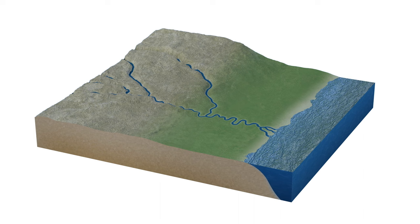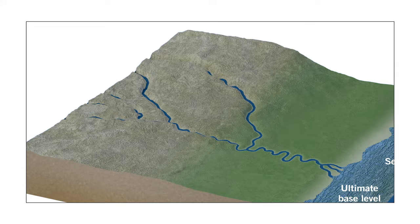You may have heard the phrase, all rivers flow to the sea. Whereas not all rivers make it to the ocean, all rivers do move downslope in an attempt to reach the same elevation as sea level, which scientists call ultimate base level.